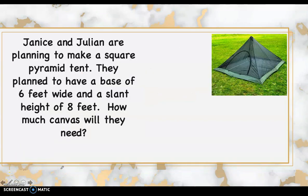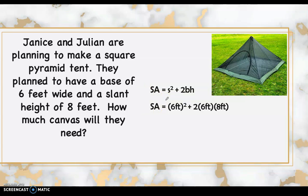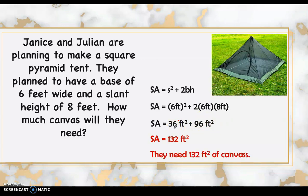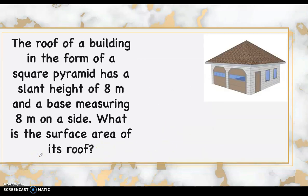Let's apply surface area in a word problem. Janice and Julian are planning to make a square pyramid tent with a base of 6 feet wide and a slant height of 8 feet. How much canvas will they need? Using SA = s² + 2bh: (6 × 6) + 2(6)(8) = 36 + 96 = 132 square feet. They need 132 square feet of canvas.